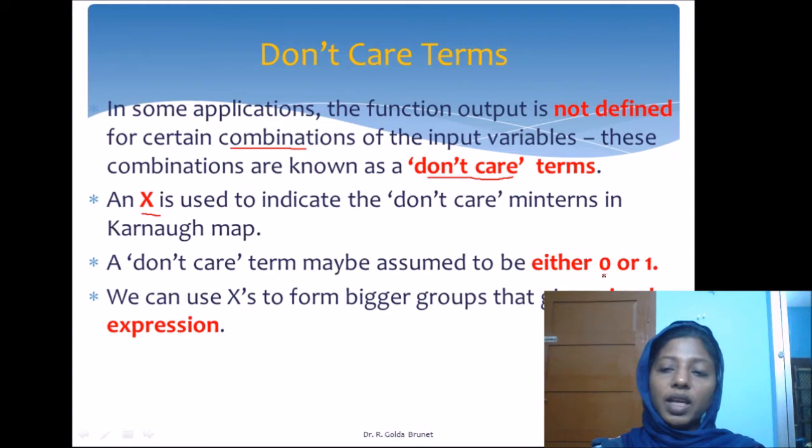We can assume this depending on our convenience. If I can use this X to form a bigger block in the Karnaugh map, then I will assume this X value is 1 and form a bigger group. Otherwise, I will simply ignore the X, which means I should cover all the 1's defined as output in groups.